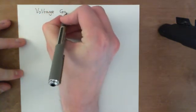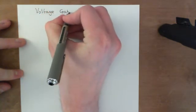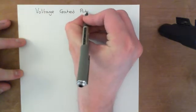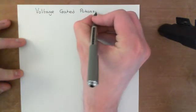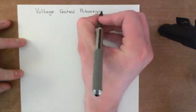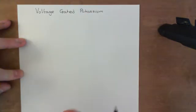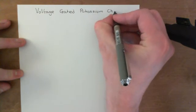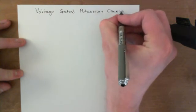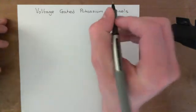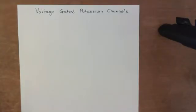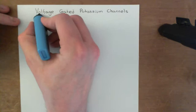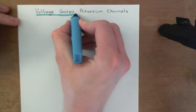I'm going to begin by giving an outline of what we're going to talk about in this video. Firstly, we're going to start off with a discussion of the action potential, which is a key physiological phenomenon that voltage-gated potassium channels play an incredibly important role in.